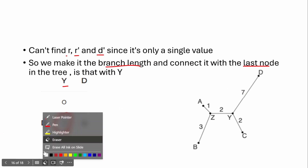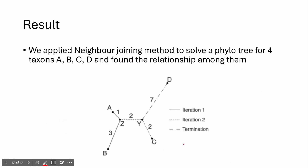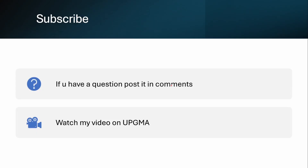In the final tree, you can see that A and B are closely related, and C and D are also closely related. There is no ancestral node — only an unrooted, star-like tree. We have successfully applied the neighbor joining method to construct a phylogenetic tree for 4 taxons and found the relationships between them. If you have questions, post them in the comments, or you can watch the video on the UPGMA method.